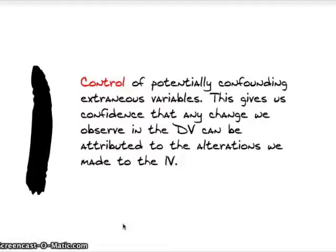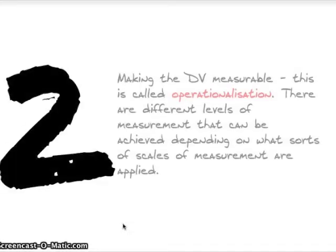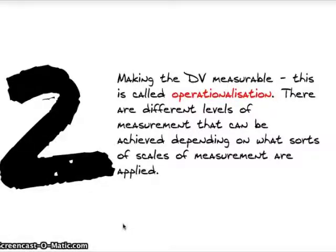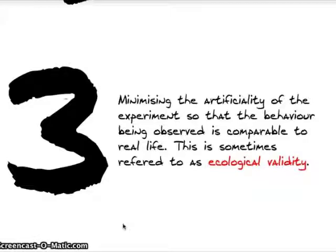Control gives us confidence that any change we observe in the DV can be attributed to alterations made in the IV. Second, when we make the DV measurable, this is called operationalization — there are different levels of measurement depending on what scales are applied, which I'll cover in another video. Third consideration: you've got to minimize the artificiality of the experiment so that the behavior being observed is comparable to the real-life situation. This is sometimes called ecological validity, or sometimes external validity.